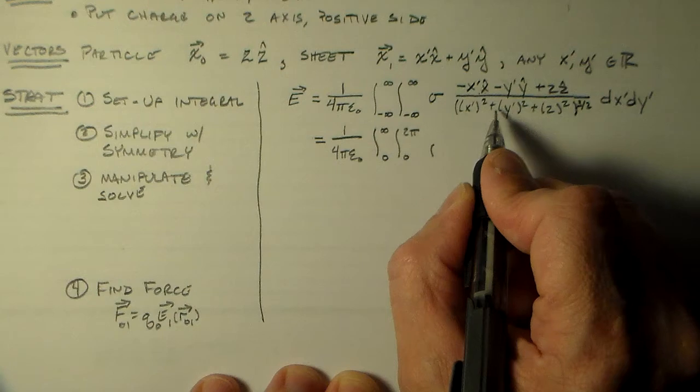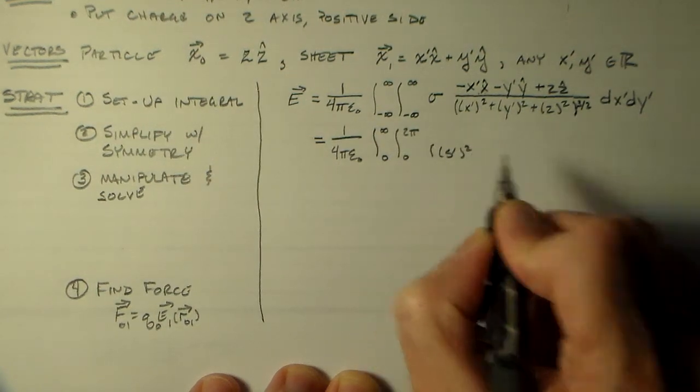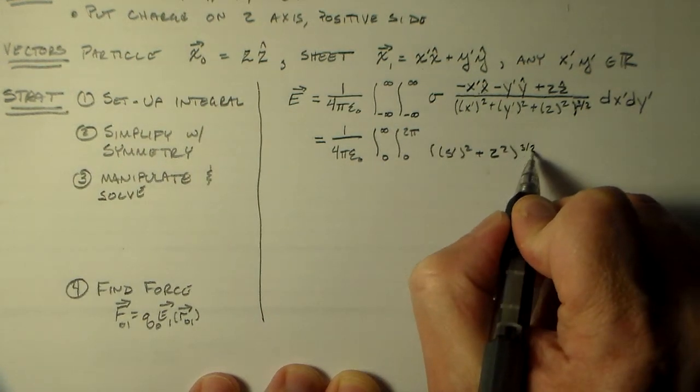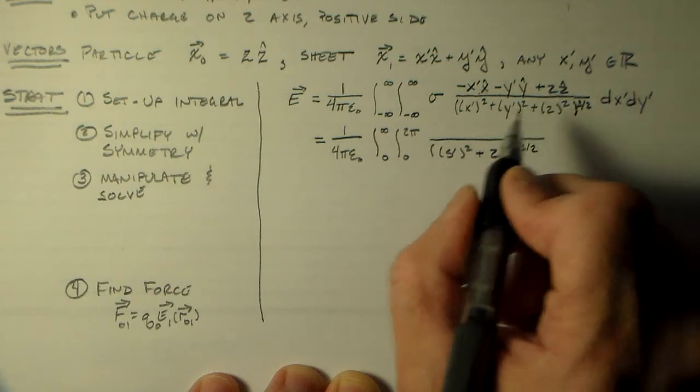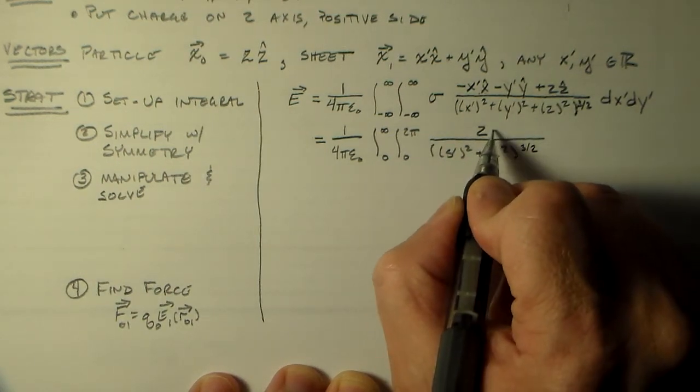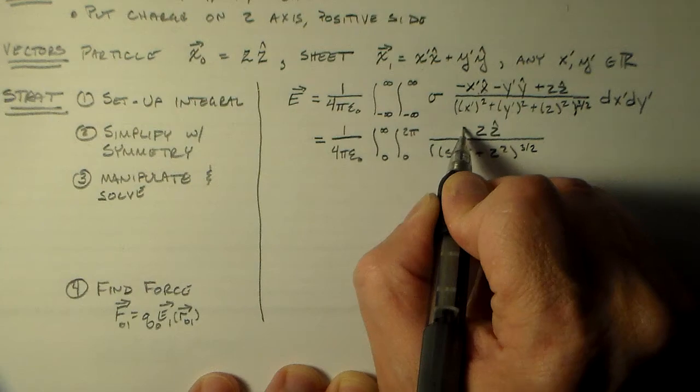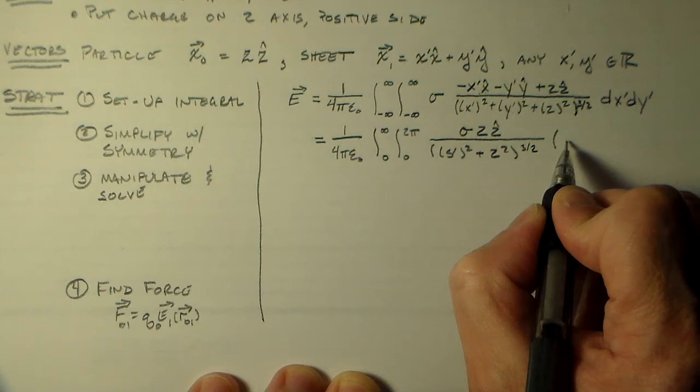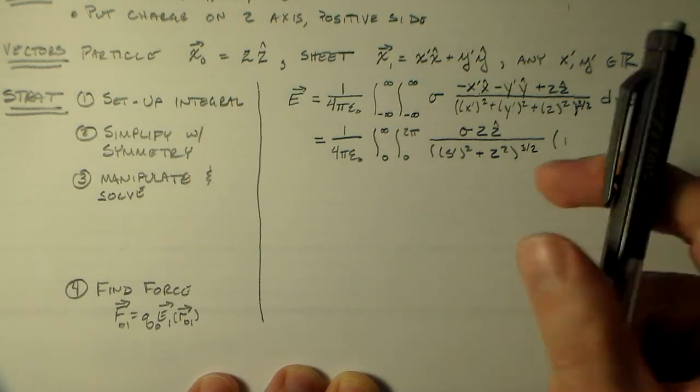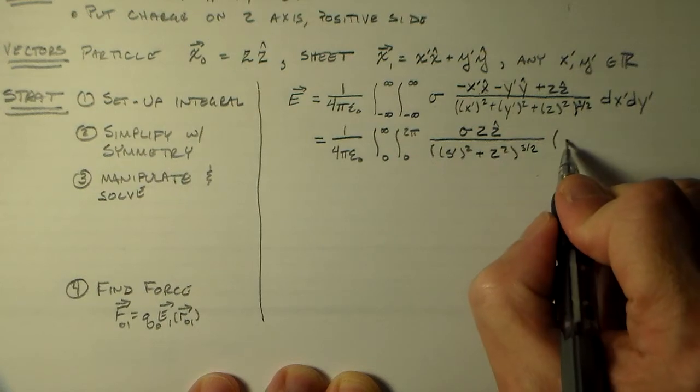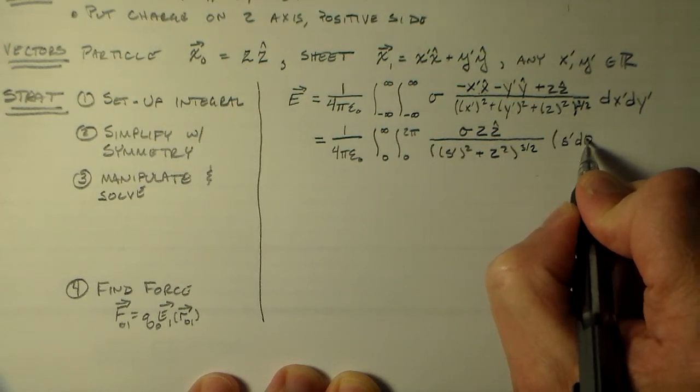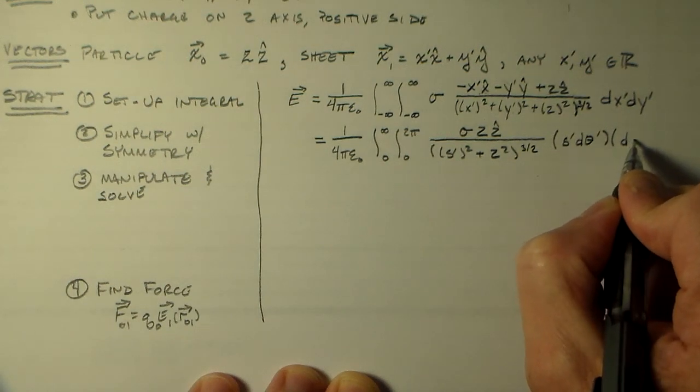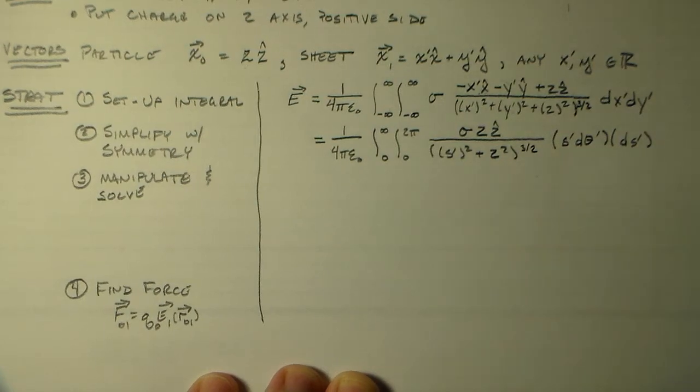So instead of X prime squared plus Y prime squared, we have S prime squared plus this Z squared to the three halves. Z goes to Z, so we will stay with that. We still have the Z hat, and we still have that sigma. Now this integration goes now with S prime, d theta prime, and d S prime.